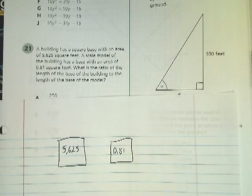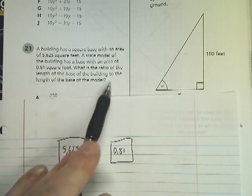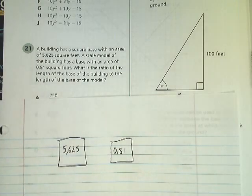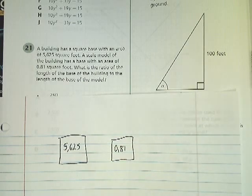So the first thing I'm going to do, just for intelligence's sake, is because the question asked me what is the ratio of the length of the base of the building to the length of the base of the model. Well I know a square has sides that are equal, so the base versus height argument is kind of irrelevant.